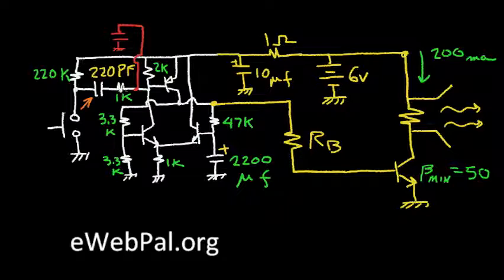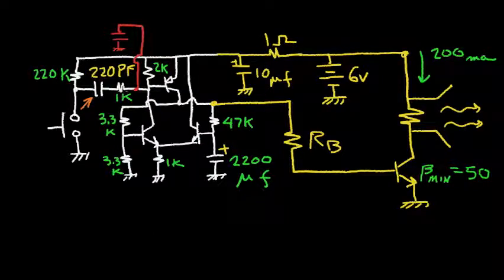So it gives me a time constant of about 220 nanoseconds, which should be more than enough to get this PNP turned on when this switch is closed by the intruder.